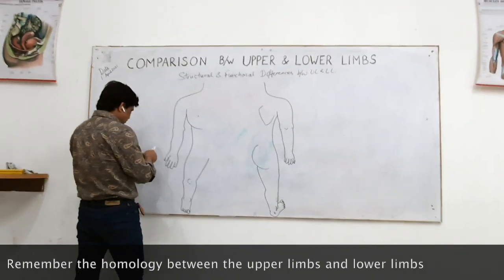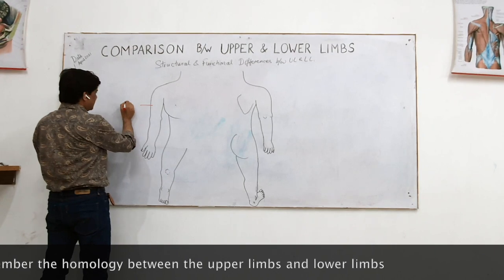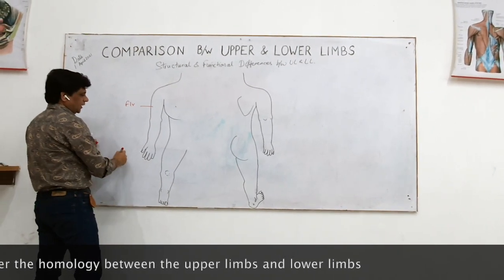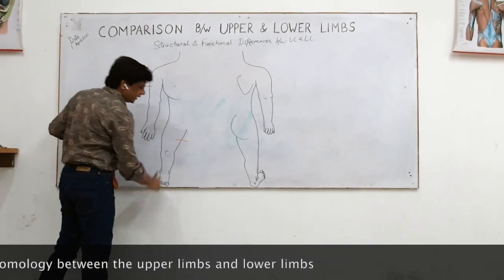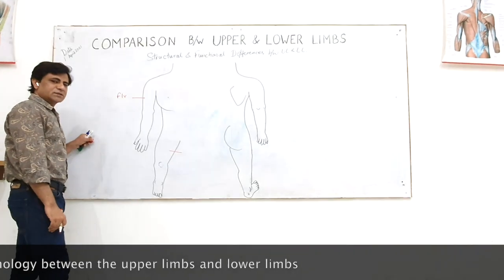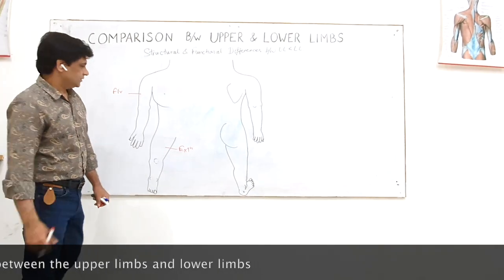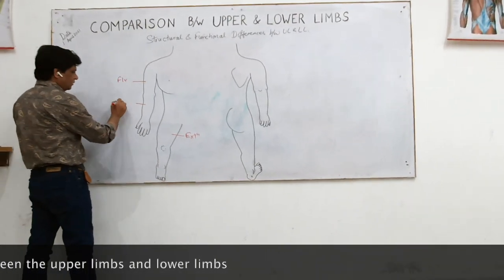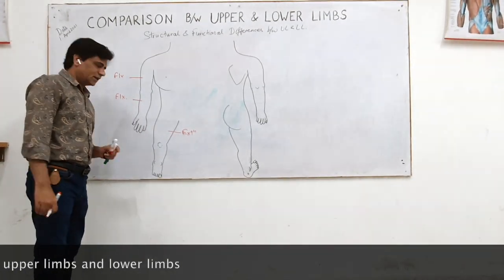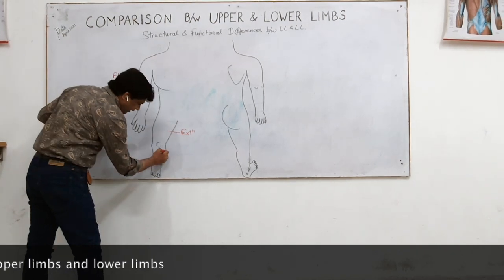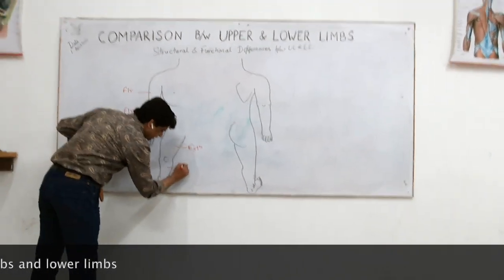The front of the arm is the flexor compartment. The arm is comparable to the front of the thigh, and the front of the thigh muscles will all be extensors. The front of the forearm — muscles here are called flexor muscles which cause flexion at the joint. Similarly, the front of the forearm is comparable to the front of the leg, which is the extensor compartment.